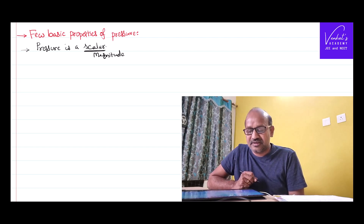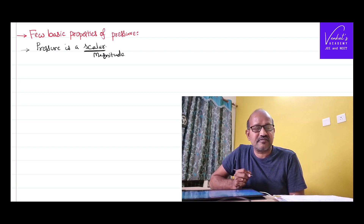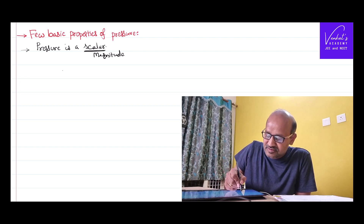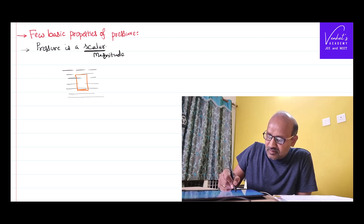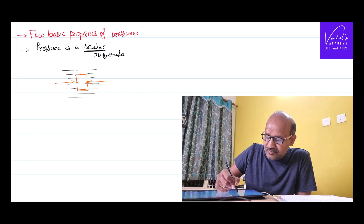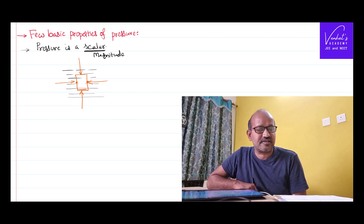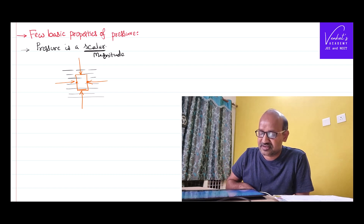In the case of pressure, we shall not say it has no direction — it has directions, but it has directions everywhere, in all directions. For example, in a fluid, at this point pressure acts this way, at this point pressure acts this way, at this point pressure acts this way. So it has so many directions acting, so many directions — we can't say this is the particular direction in which it is acting.